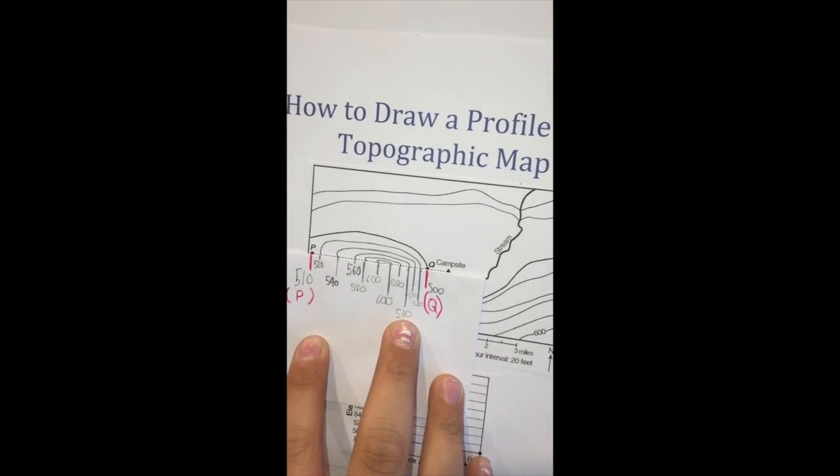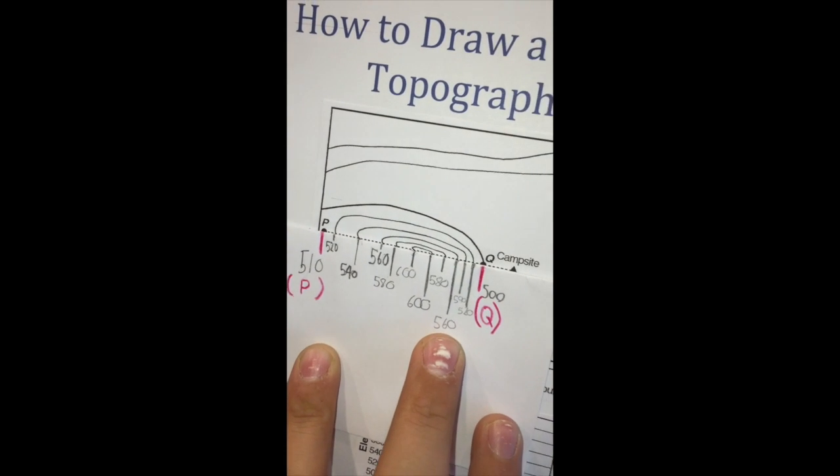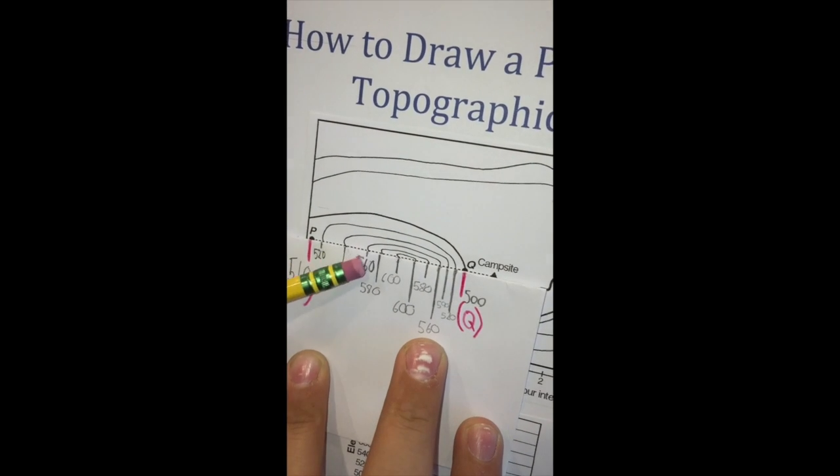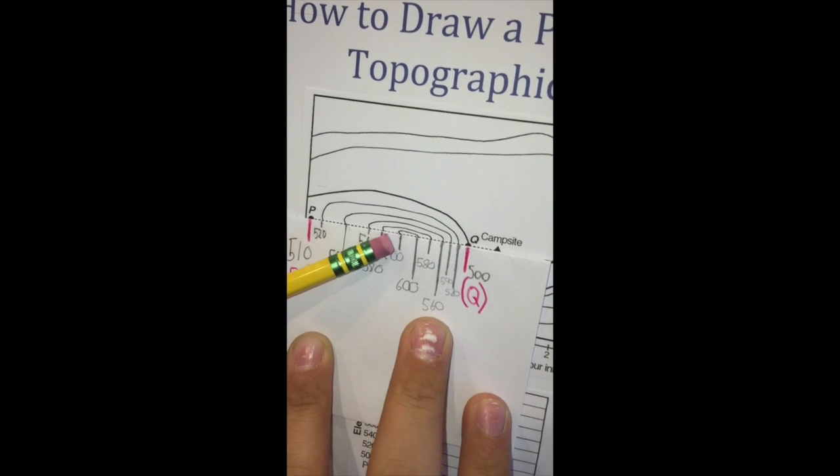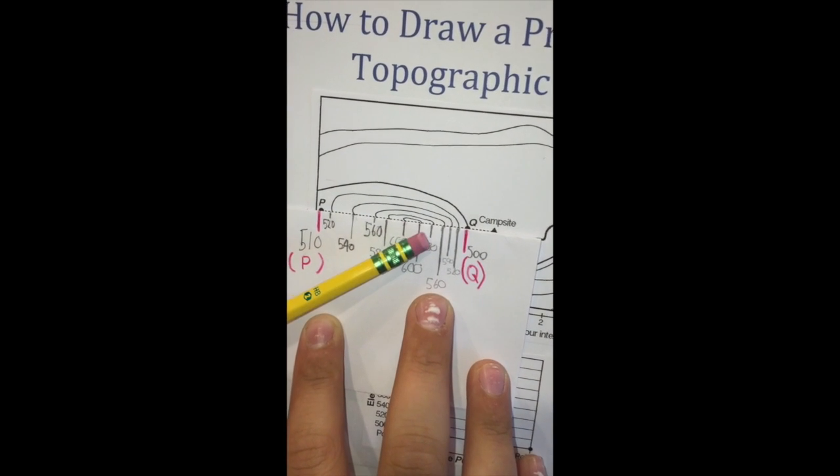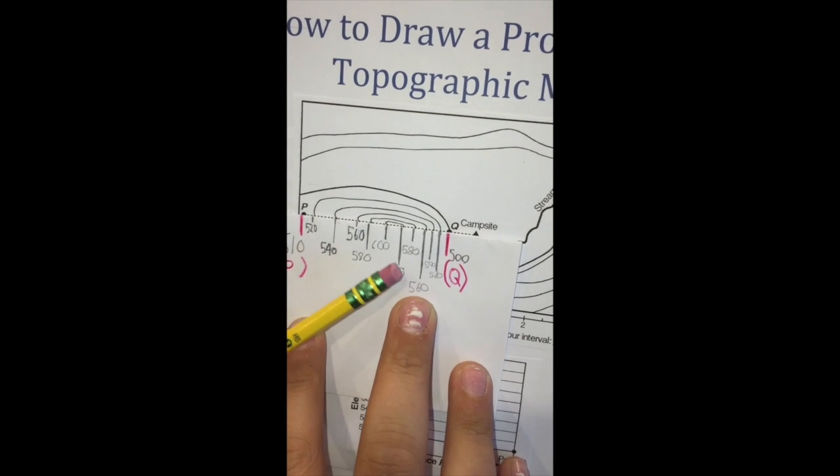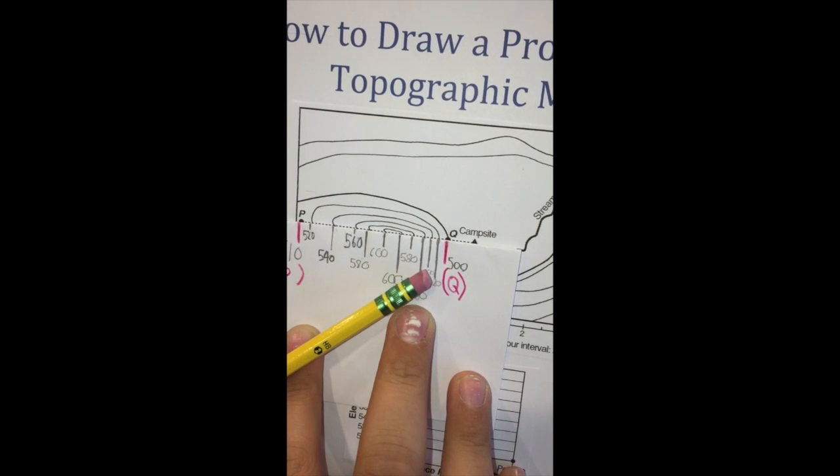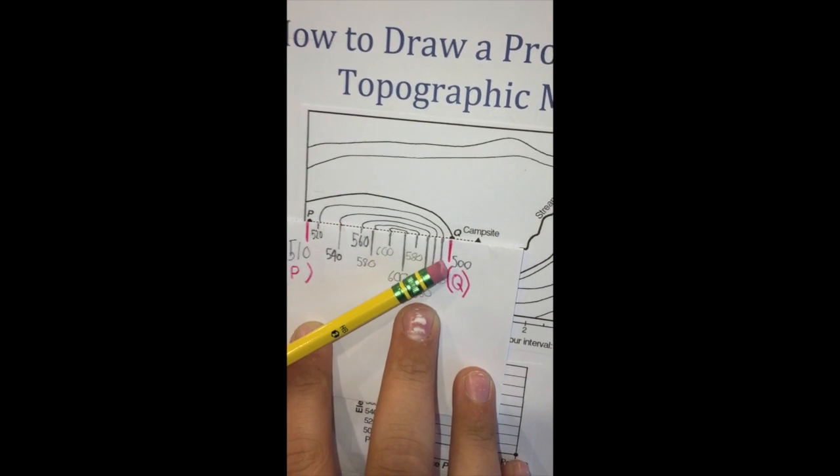The first value is 510, then 520, then 540, 560, 580, 600, then 600 again, then 580, then 560, 540, 520, then 500, which happens to be Q.